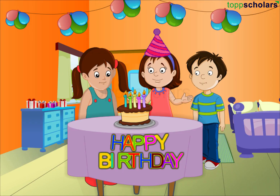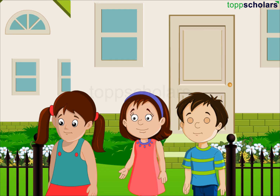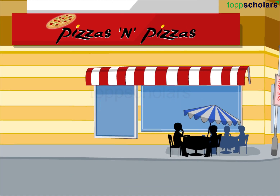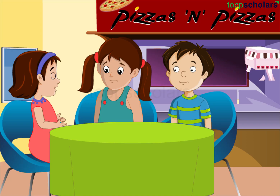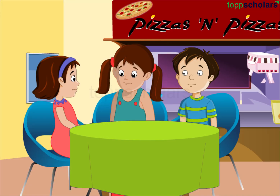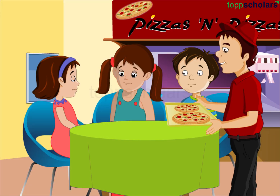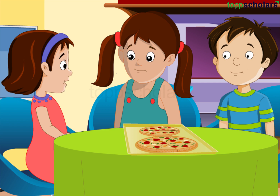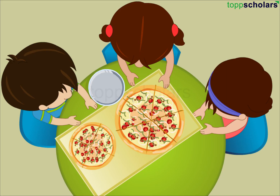Today is Rima's birthday. She is going out for a party with her friends. They all went to have pizza. Let's order two pizzas — one large and one small. This large pizza has six equal parts and the small pizza has four equal parts. I'll have one piece from these six pieces of pizza.